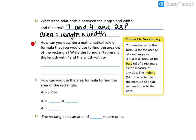Alright, letter E. How can you describe a mathematical rule or formula that you would use to find the area of the rectangle? Write the formula. Represent the length with L and the width with W. So this is very similar to what we wrote up here. We have A for area equals length times width.